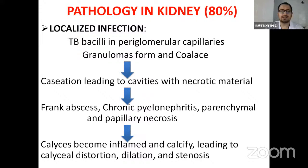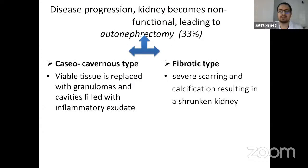Pathology in the kidney: initially, TB bacilli reach the peritubular capillaries via the hematogenous route and form granulomas. Later, caseous necrosis leads to cavities and necrotic papillae, forming frank abscesses or tubercular nephritis, parenchymal and papillary necrosis, leading to inflamed calyces with distortion and dilatation. Disease can progress to a non-functional kidney in 33% of cases, leading to autonephrectomy. There are two types: caseo-cavernous, where viable tissue is replaced with granulomas and cavities, and fibrotic type, with severe scarring and calcification resulting in a shrunken kidney.